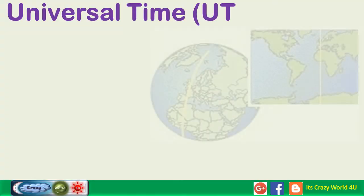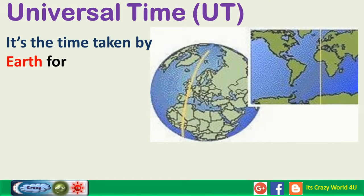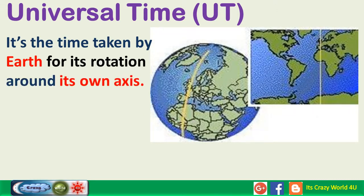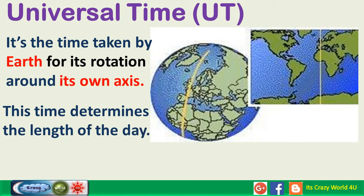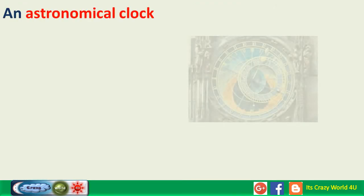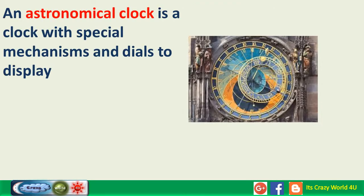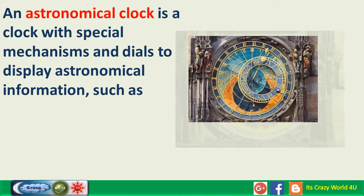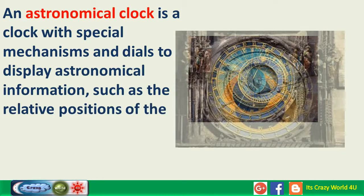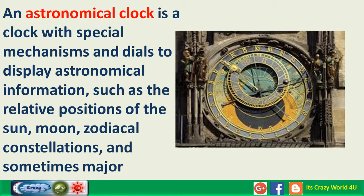Universal Time, UT. It's the time taken by Earth for its rotation around its own axis. This time determines the length of the day and is also known as astronomical time. An astronomical clock is a clock with special mechanisms and dials to display astronomical information, such as the relative positions of the Sun, Moon, zodiacal constellations, and sometimes major planets.